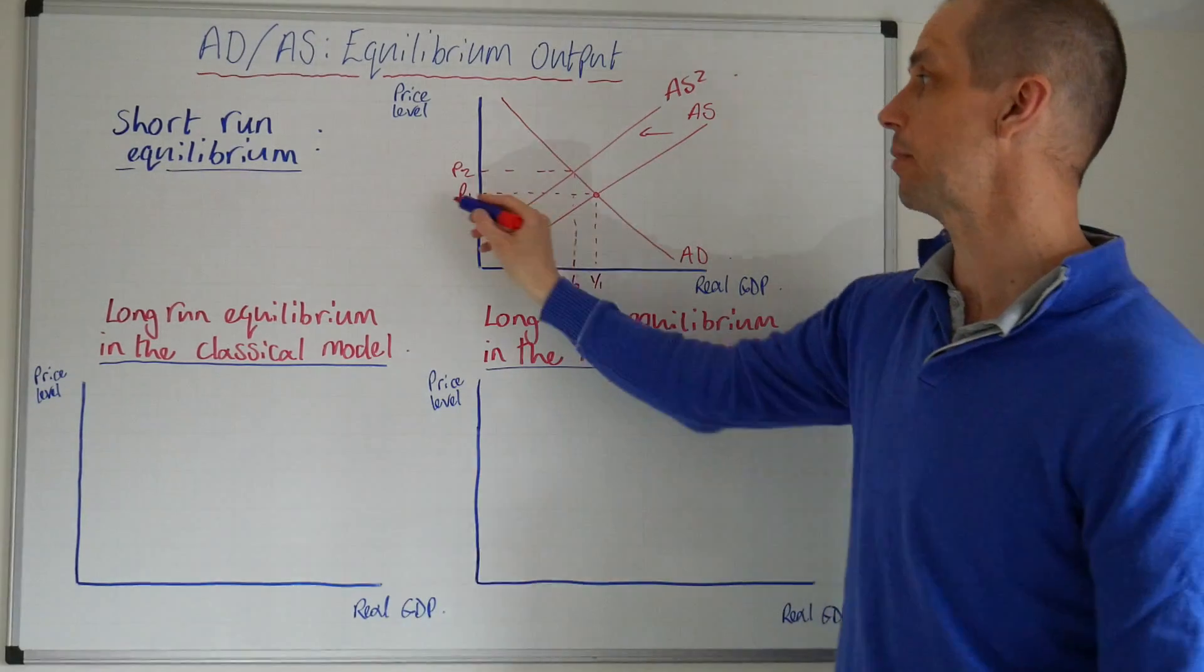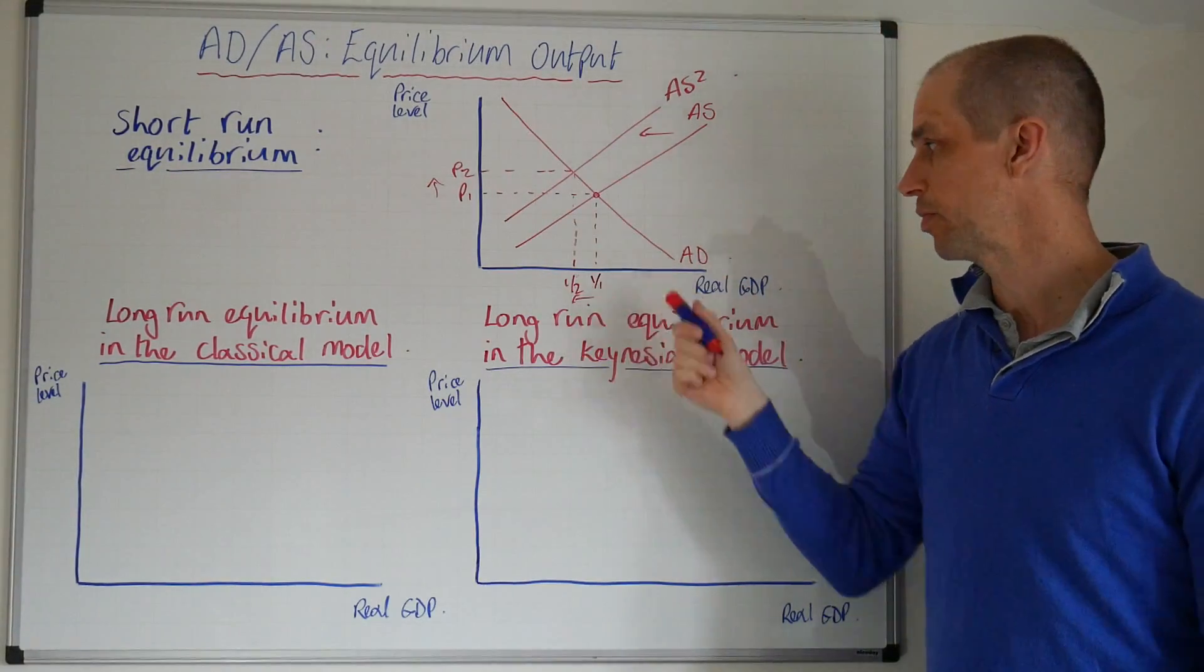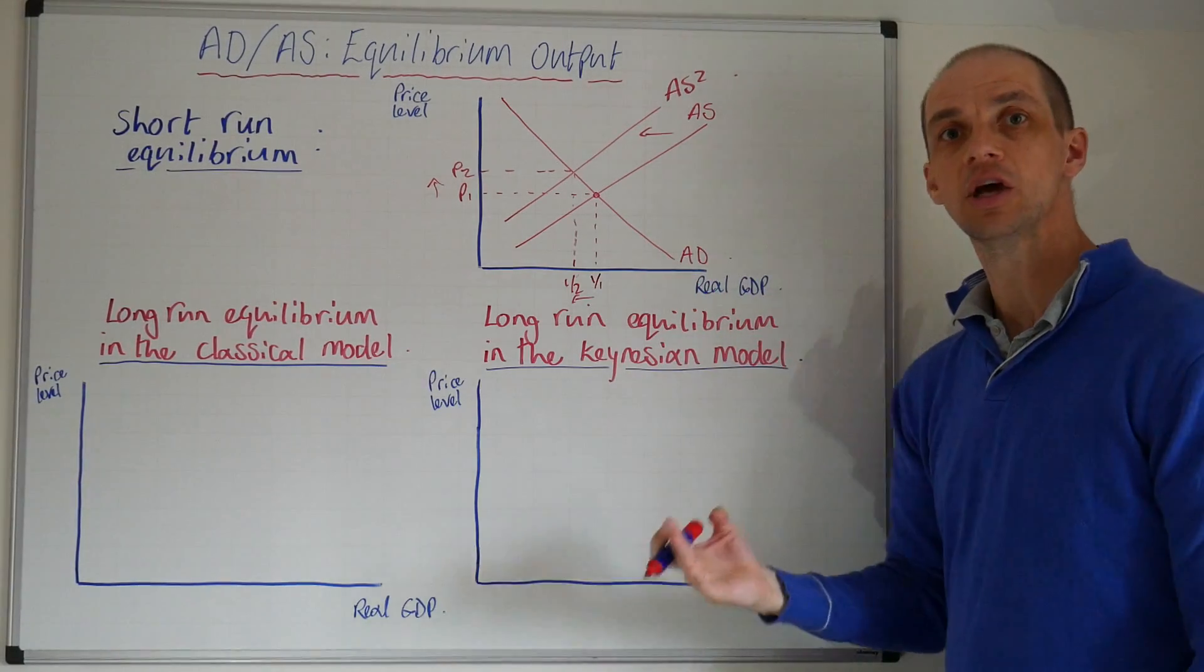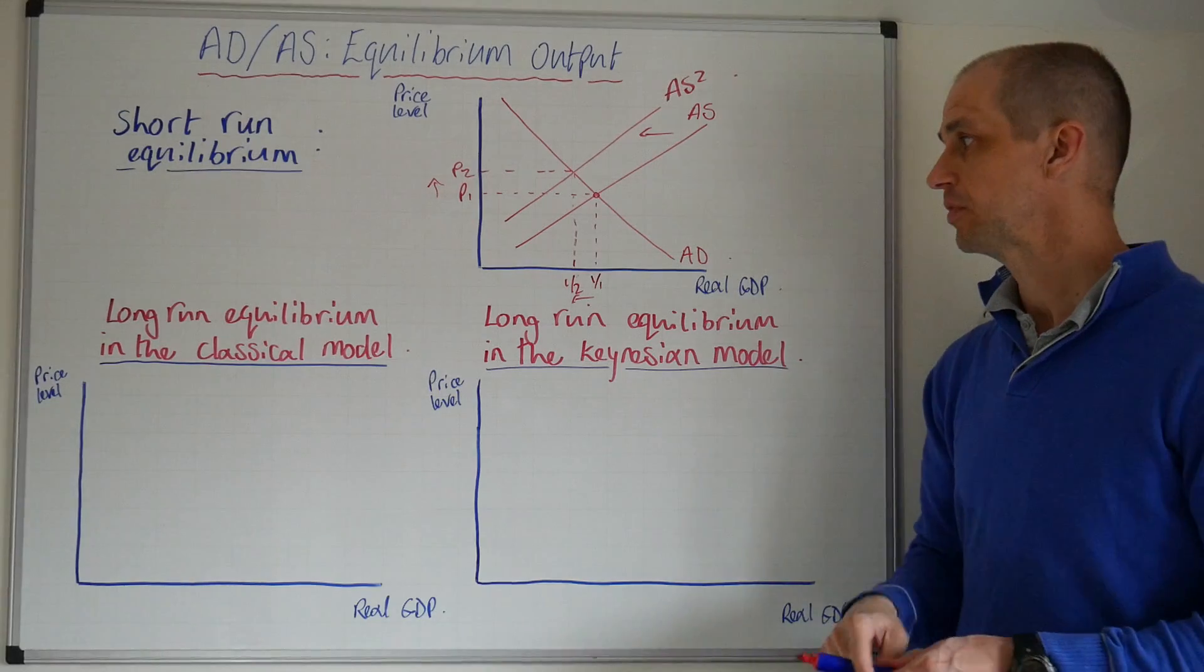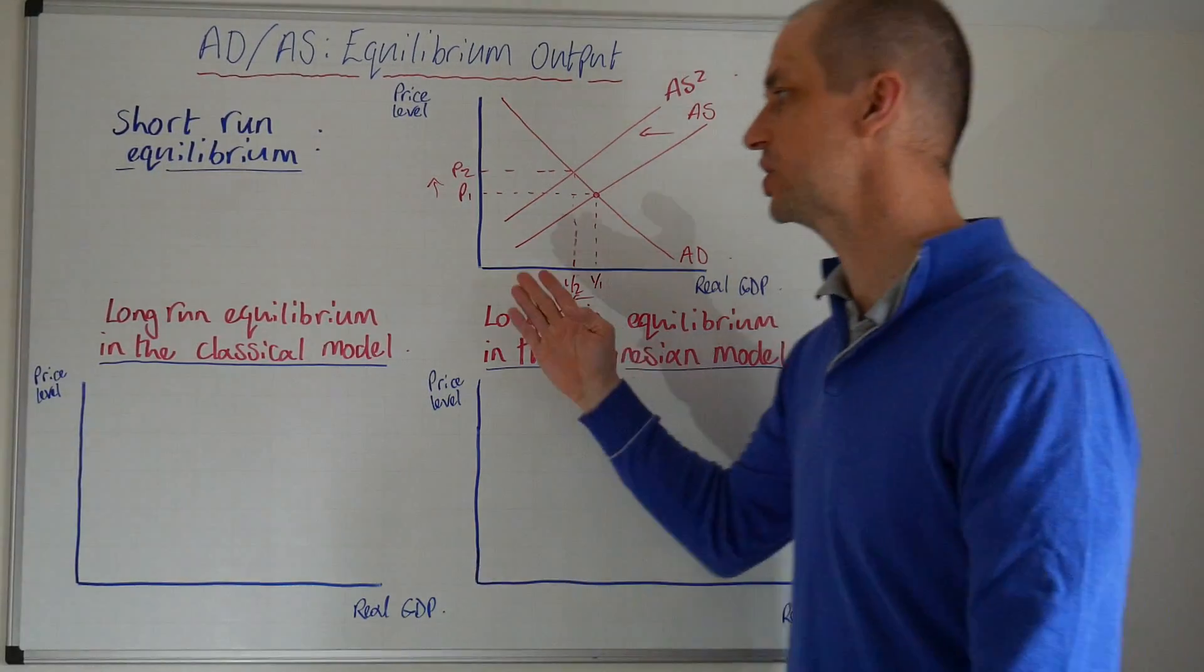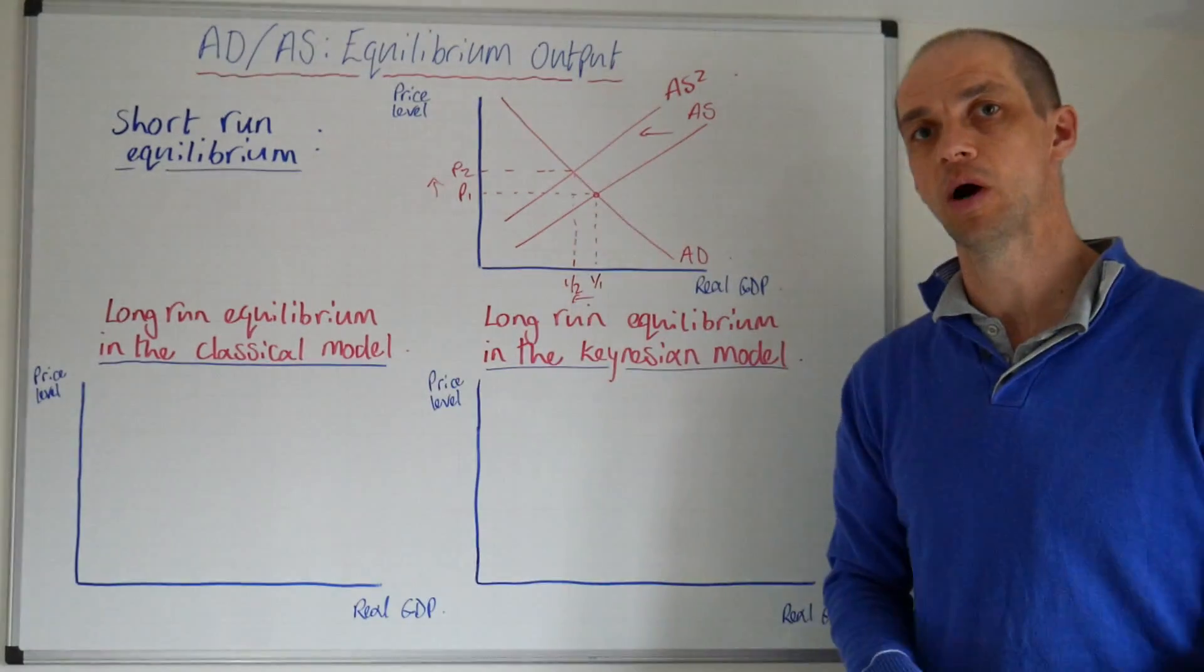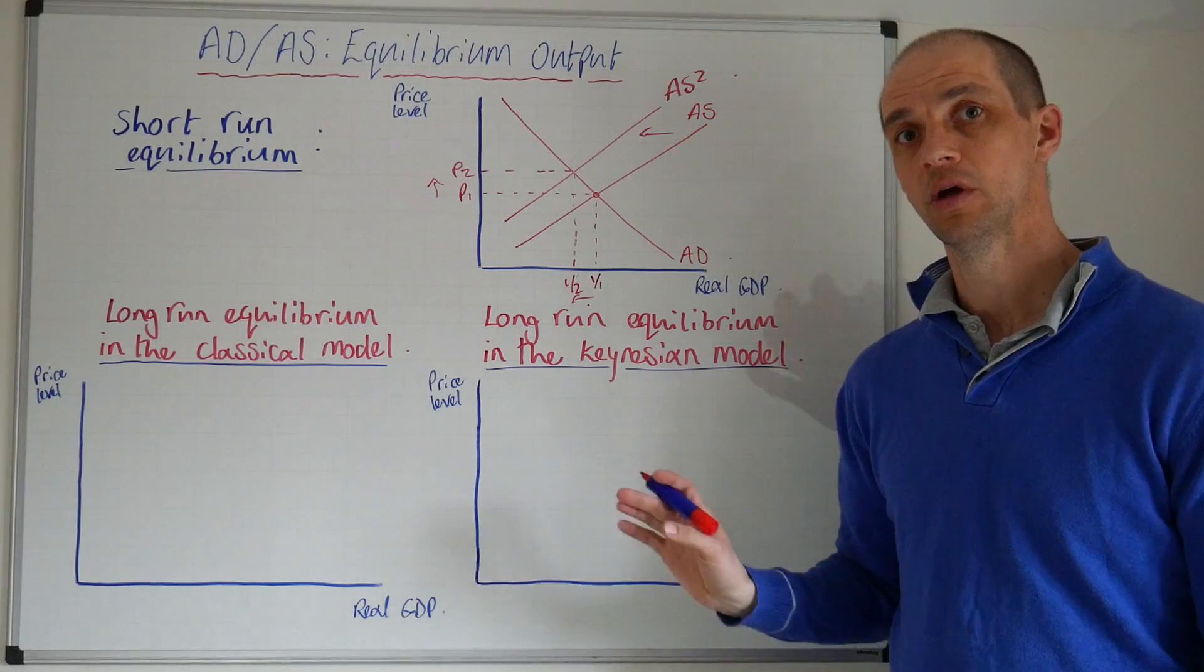So prices would now rise up to P2 from P1 and equilibrium output or real GDP would decrease from Y1 to Y2. So that is our scenario in the short run, so let's now consider this when it comes to the long run equilibrium, firstly in the classical model of economics.